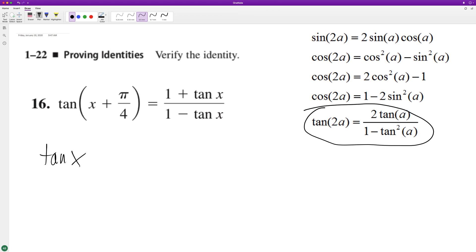tangent of x times tangent of π/4 over... Because it's a double angle, and actually excuse me, this should be plus, and then one minus tangent of x tangent of π/4.